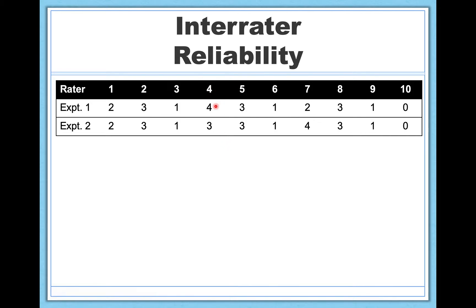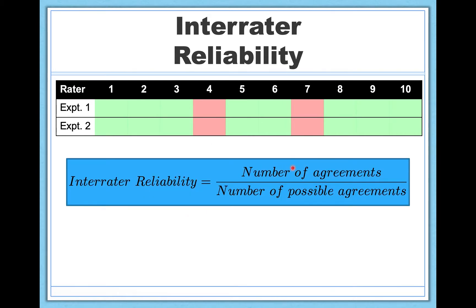But you'll notice that two of these are disagreements. On trial four, for example, experimenter one saw four smiles, whereas experimenter two only saw three. And we see disagreement on trial seven as well. So in this case, we have eight agreements and two disagreements. So our inter-rater reliability is simply eight over ten, because that's the number of trials. That's the number of possible times they could have agreed if they were perfect. So in this case, we're going to have eight over ten, or 80%, 0.8 if you'd like to think of this as a proportion. And this is our inter-rater reliability.